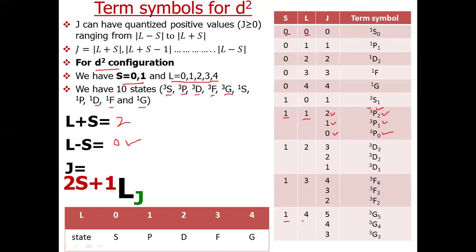For S = 1, L = 4: L+S = 4+1 = 5 and L−S = 4−1 = 3. So J = 5, 4, or 3, giving term symbols 3G5, 3G4, and 3G3. Similarly you can find the term symbol for any system.